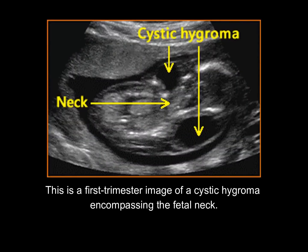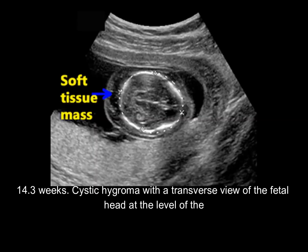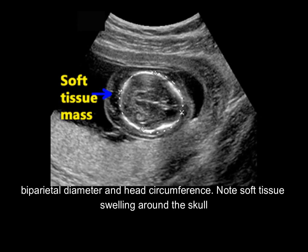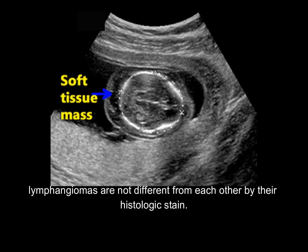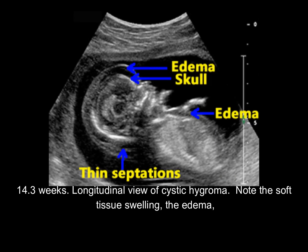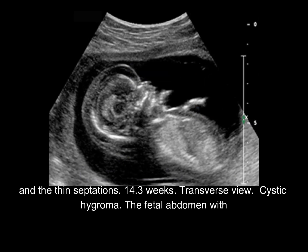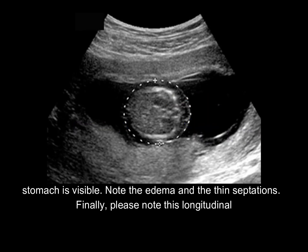This is a first-trimester image of a cystic hygroma encompassing the fetal neck at 14.3 weeks. A transverse view of the fetal head at the level of the biparietal diameter and head circumference shows soft tissue swelling around the skull and the thin septations characteristic of cystic hygroma. A longitudinal view of the cystic hygroma also demonstrates soft tissue swelling, edema, and thin septations. In a transverse view, the fetal abdomen with stomach is visible, again showing edema and thin septations.